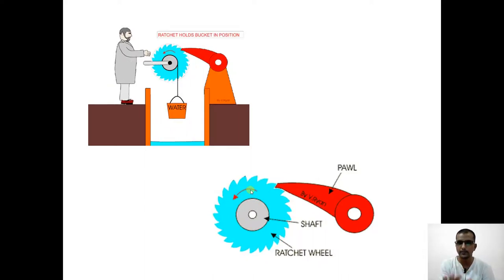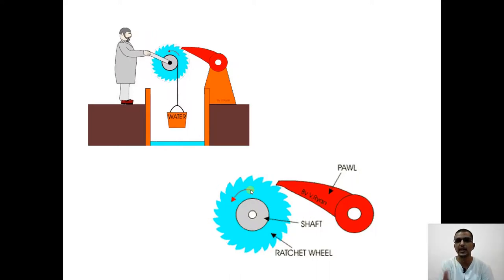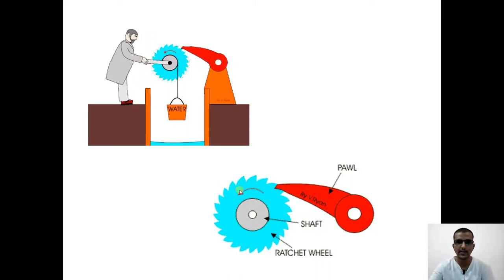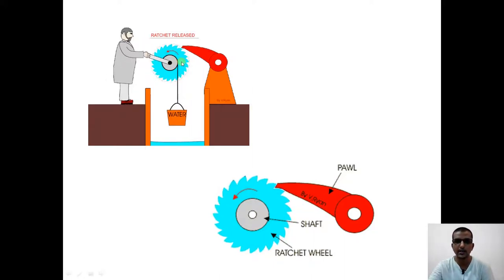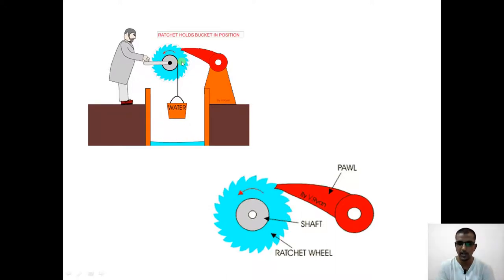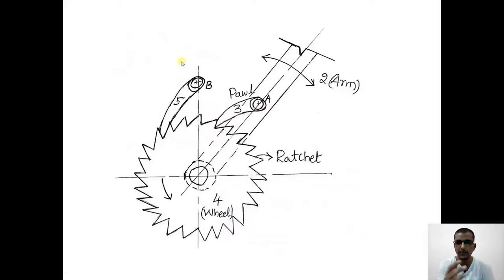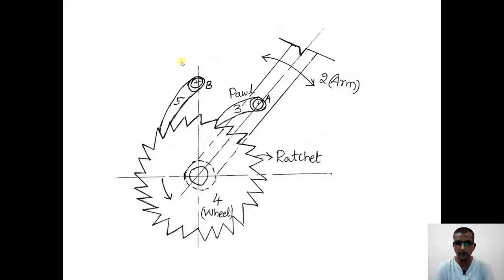You can lock it — once you provide motion using a pawl, you can make sure that the motion does not get reversed, as seen in an example where a man is trying to lift a bucket. The pawl ensures the ratchet does not reverse direction. Now, looking at the construction: we have an arm through which motion is imparted to a wheel containing teeth, which we call the ratchet.